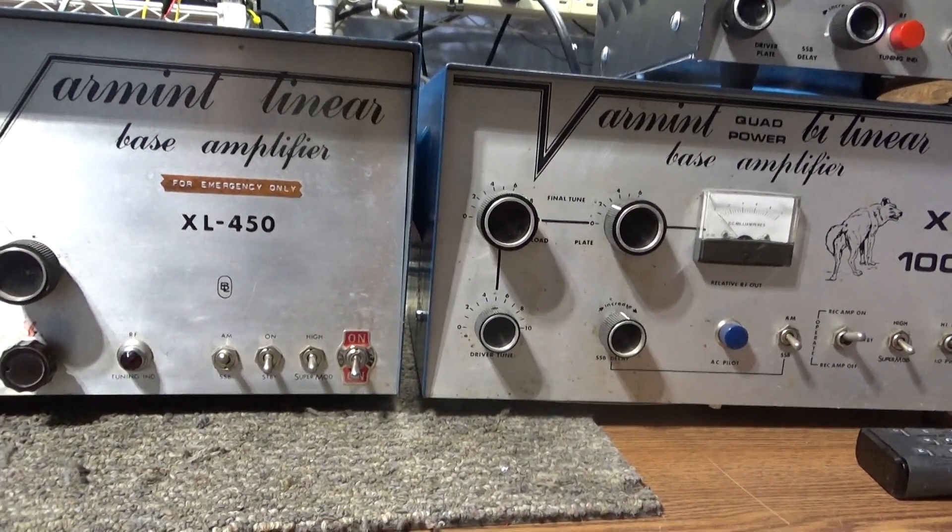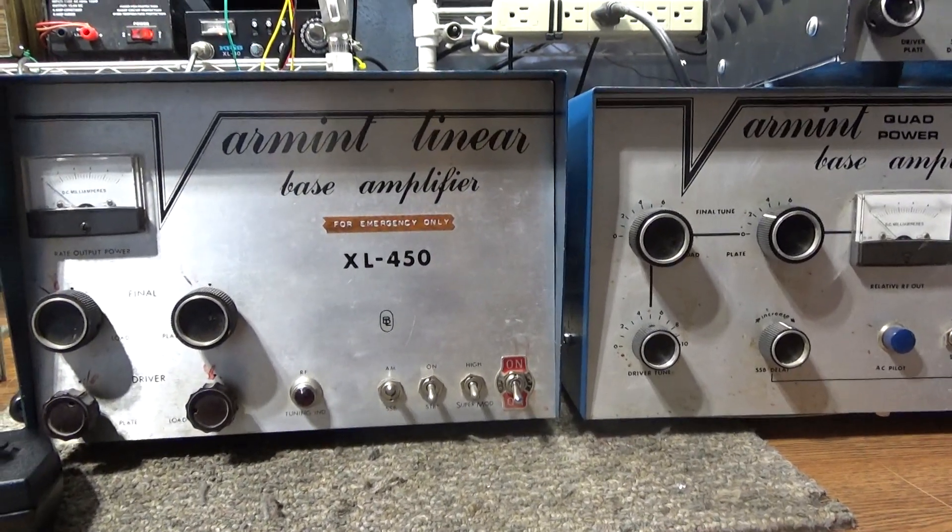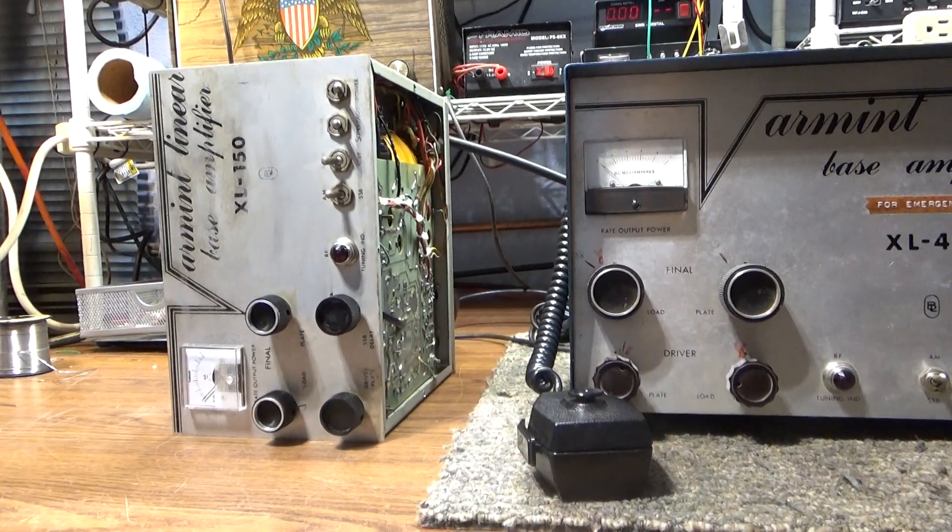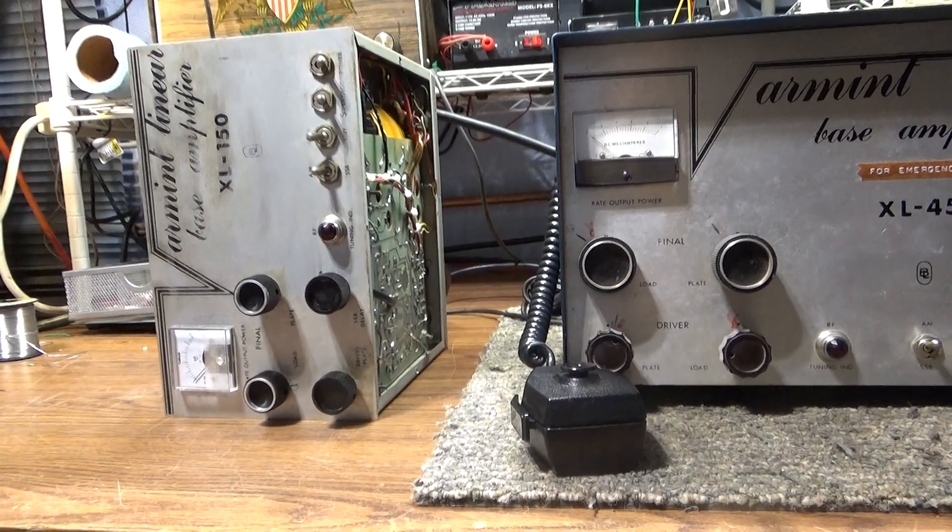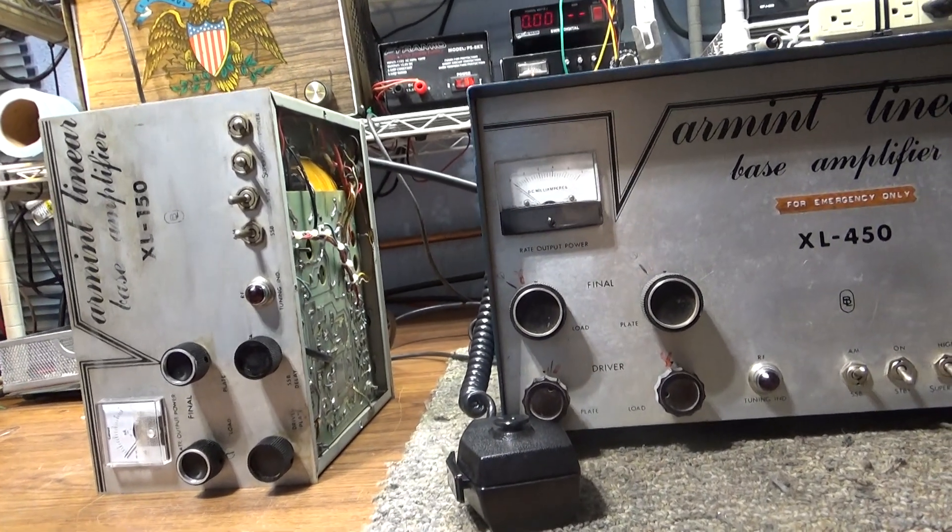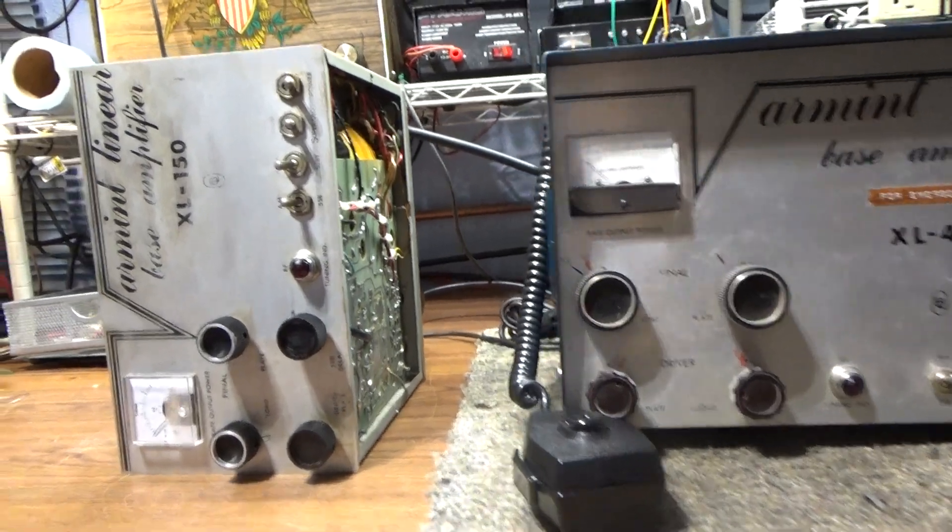Varmint also makes a 100, which is a small little guy that looks like a mobile. The 100 has two tubes, two 6KV6s, which are the small ball tubes.